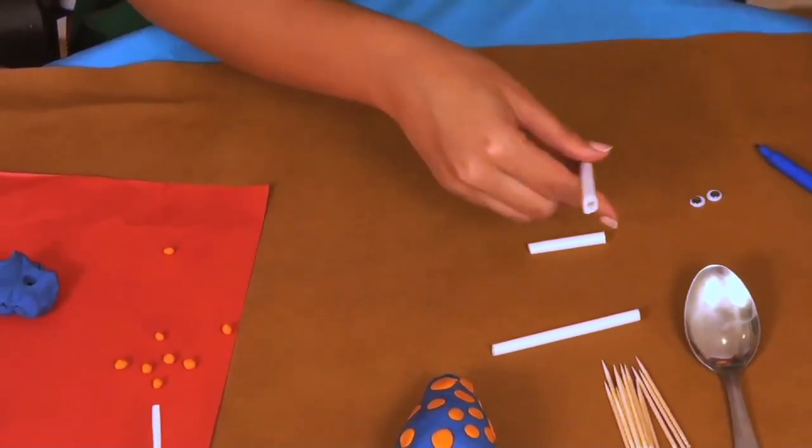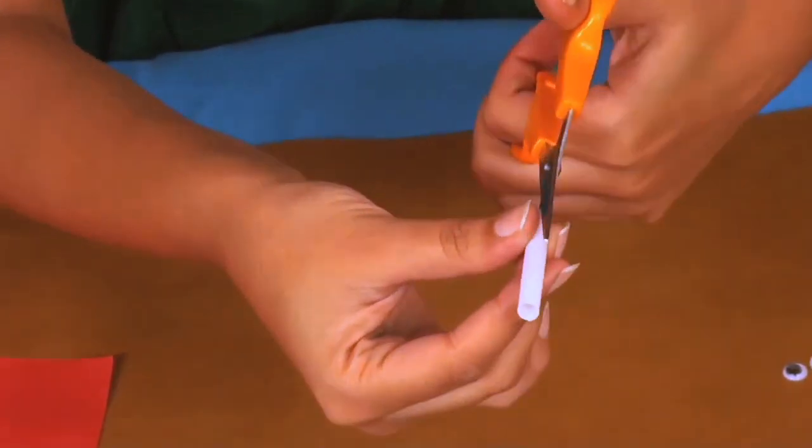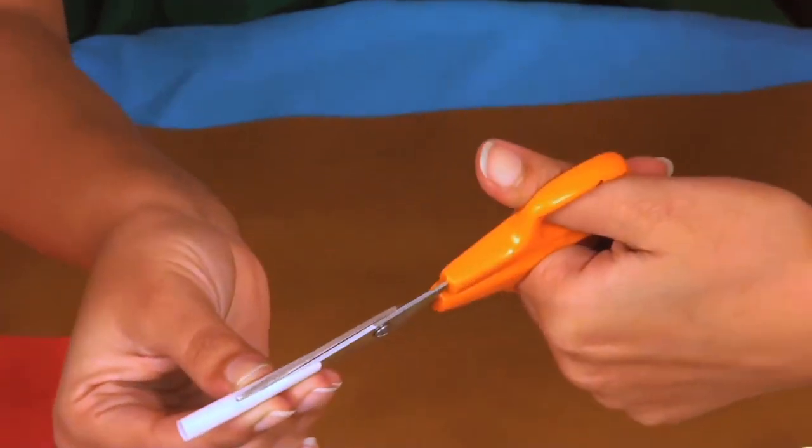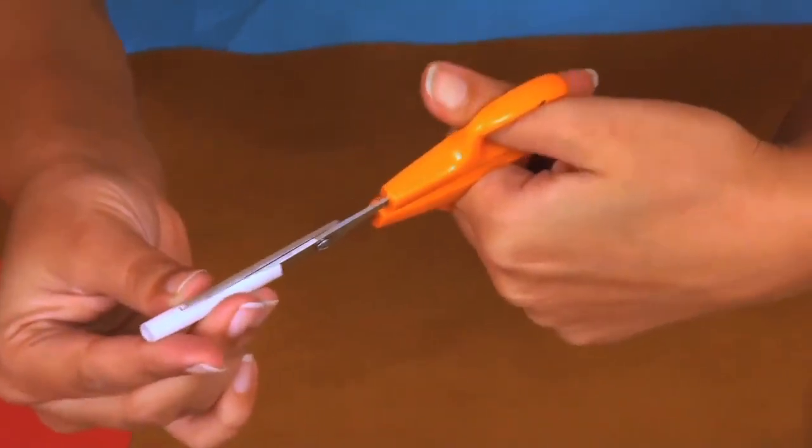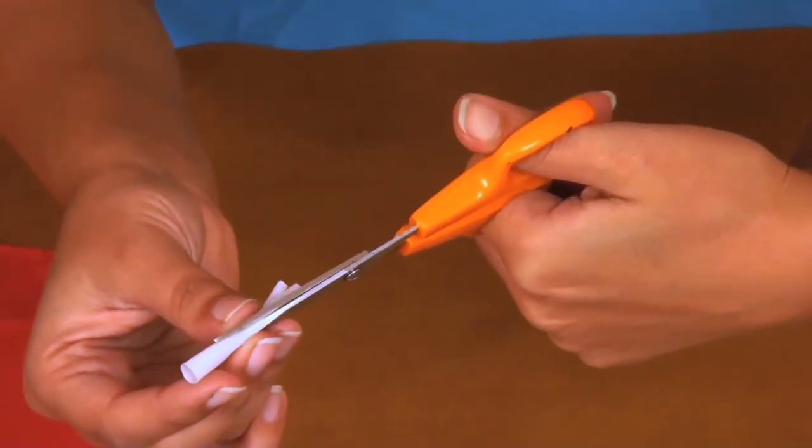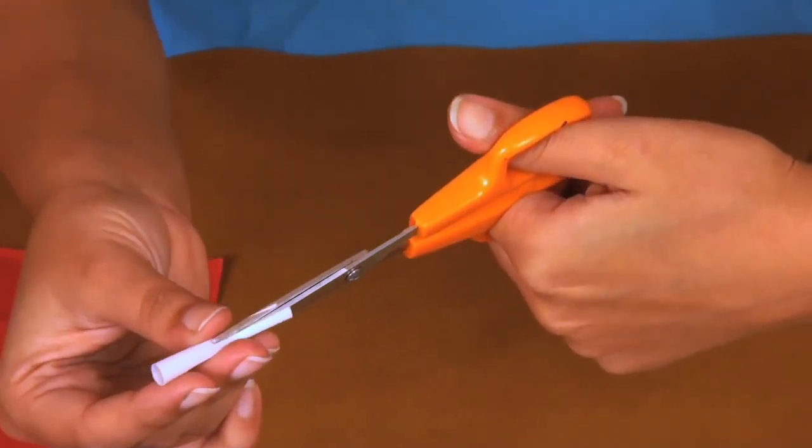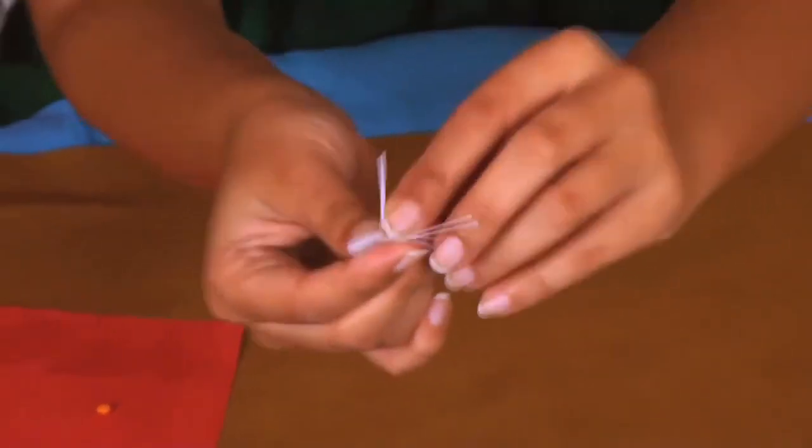After that, cut about two inches of straw. And then further, cut tiny strips from one end. Leave some space on the other end. Open up the straw and spread them out a little like this.